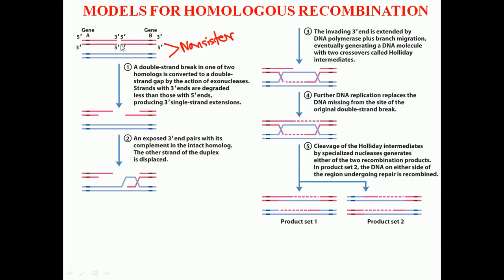The 3' overhang strand invades the other strand and places itself there through complementary base pairing. After strand invasion occurs from both sides, structures resembling chiasma — called branch points or crossover points — are formed. Two crossover points can form.